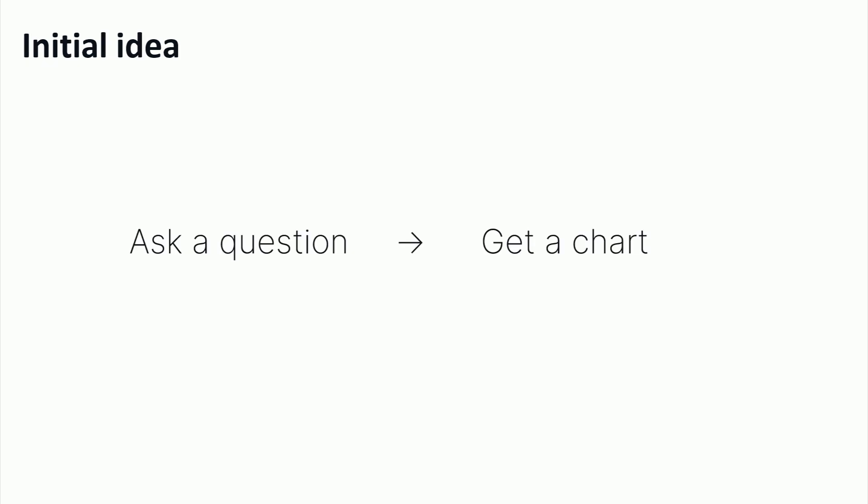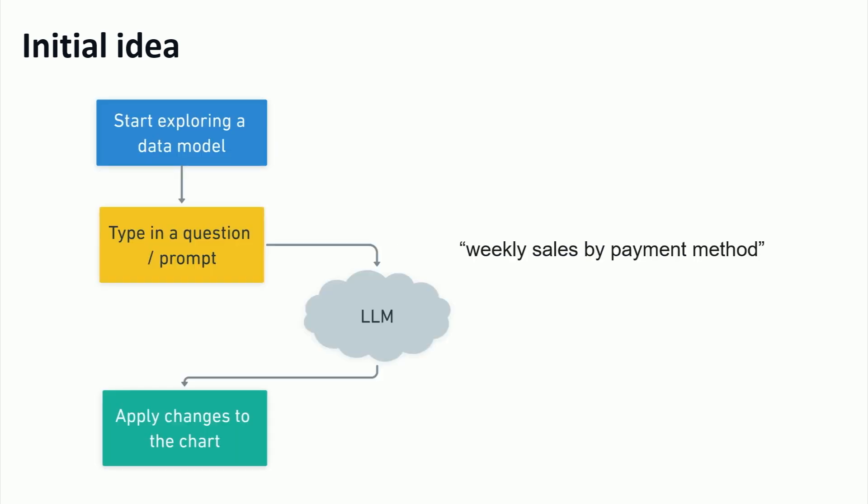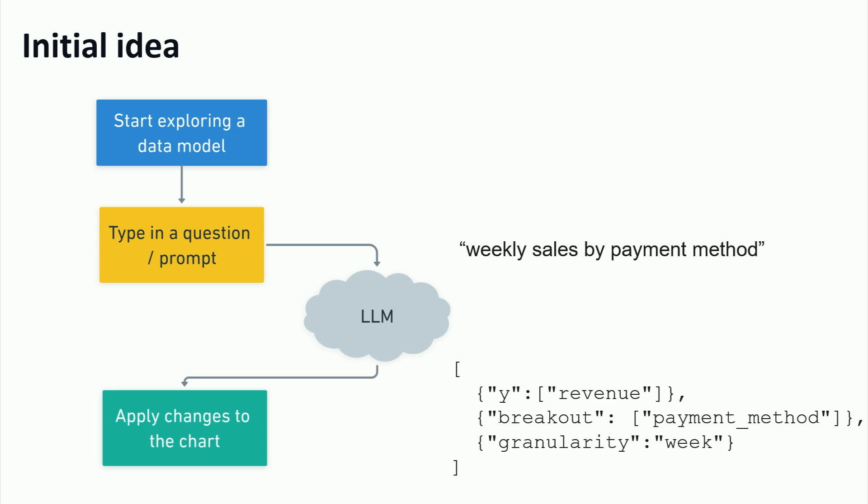We kicked off this project. Our initial idea: the user is going to ask a question, it's going to be magic, they're going to get a chart. Here was the workflow — the user was going to choose a data model to explore, type in what they want, like "weekly sales by payment method." It's going to return back some JSON. We invented this new language that the LLM was going to speak, imagining you're interacting with the chart — so it's going to say change the y-axis, add a breakout, change the granularity — and then those changes were going to be applied directly to your chart.